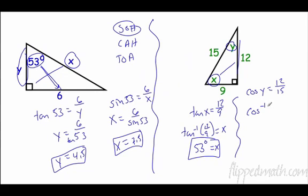So, inverse cosine of 12 divided by 15 equals y, and so y is going to be 37 degrees.